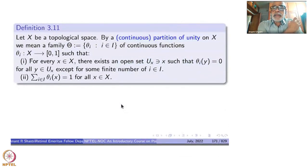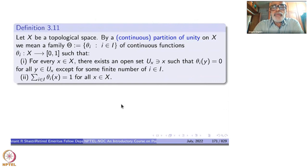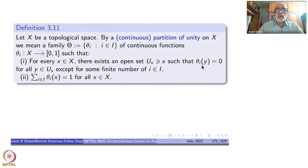Take any topological space X. By a partition of unity on X — continuity is assumed — we mean a family of functions indexed by I. All these functions are defined on the whole of X to the closed interval [0,1]. The first property is: for every x, you have a neighborhood U_x of x such that θ_i is 0 on all y belonging to U_x, except for finitely many i in I.